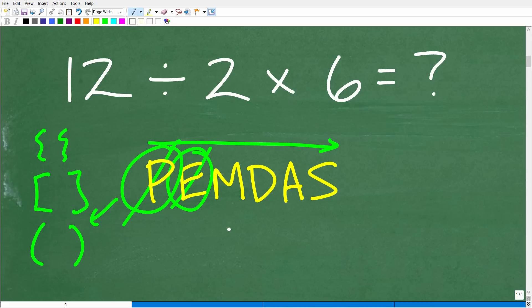So M, D, A, and S. M stands for multiplication, D stands for division, A stands for addition, and S stands for subtraction.